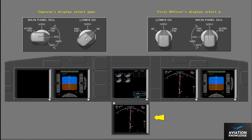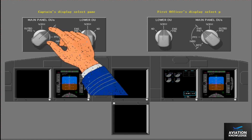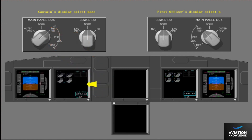Let's reset the lower display. Select inboard engine primary with the first officer's main panel DU's selector. The upper DU blanks and the engine displays move to the first officer's inboard DU. The first officer's outboard DU shows the primary flight display. If the captain now selects engine primary, the captain's inboard DU also shows the engine displays and the primary flight display moves to the outboard DU.